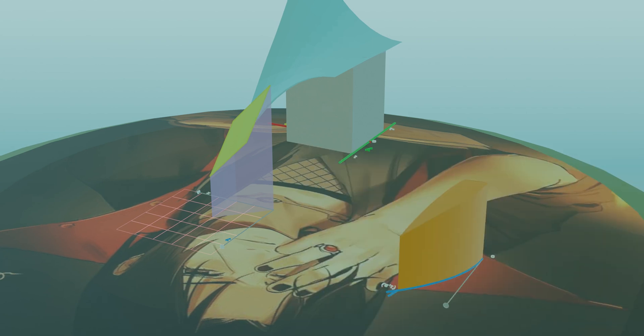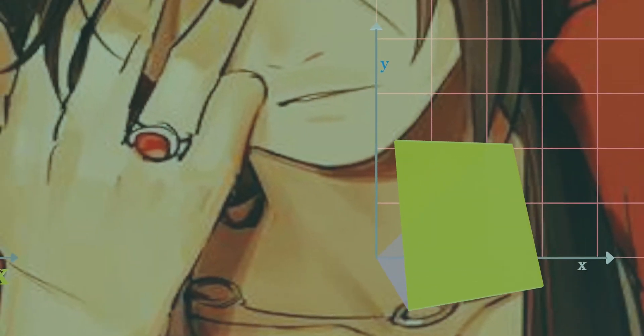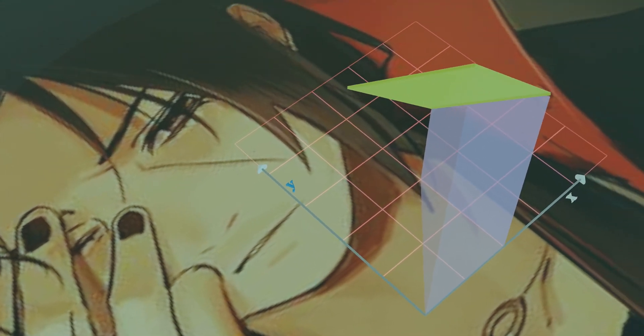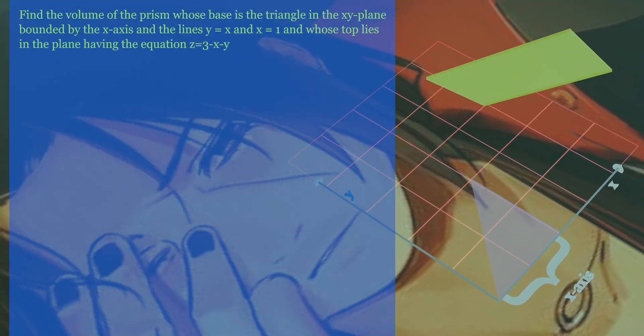Let's start with our prism object. The question for this will be: find the volume of the prism whose base is the triangle in the xy-plane, bounded by the x-axis and the lines y equals x, and x equals 1.